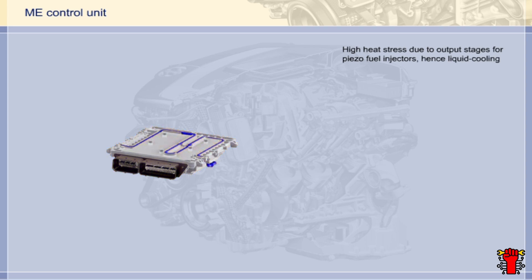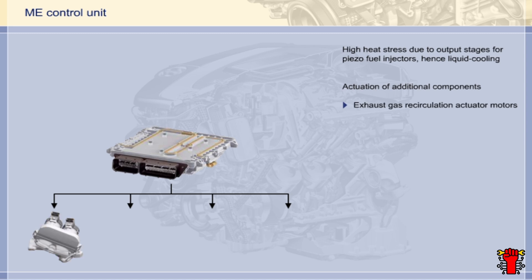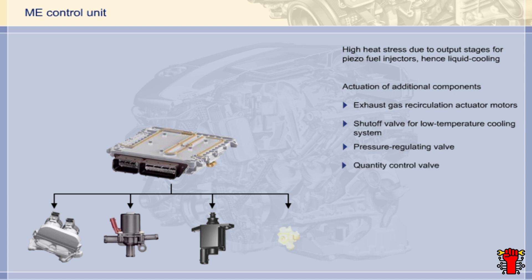On the DE engine, the control unit must also actuate a number of additional components. These are the actuator motors for external exhaust gas recirculation, the shutoff valve for the low-temperature cooling system, the pressure regulating valve, and the quantity control valve of the fuel system's high-pressure circuit.